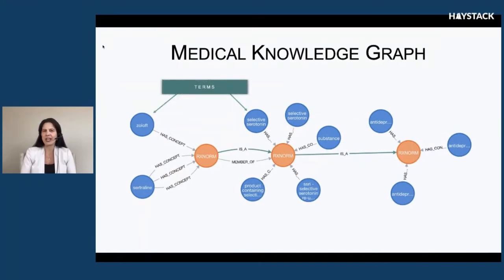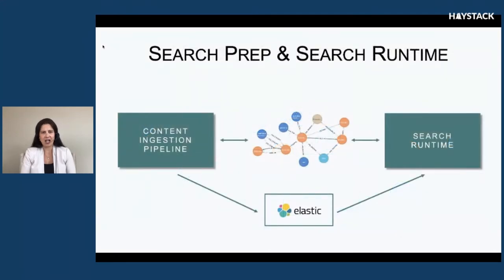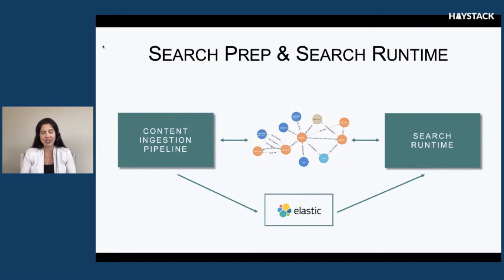Terms are primarily our entry point into our knowledge graph — they represent ways users would search in our system and can also represent synonyms. Once we have an entry point into the graph, we can make a correlation between a term and a concept. We can also leverage relationships to traverse through the knowledge graph and enhance our search experience. We use this medical knowledge graph as part of both our search prep environment and our search runtime environment. Our content ingestion pipeline consults heavily with it to semantically understand text, then stores results in our Elasticsearch index. The search runtime environment also relies heavily on the knowledge graph prior to reading from our index.